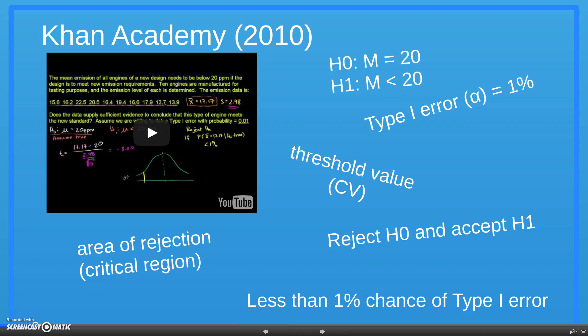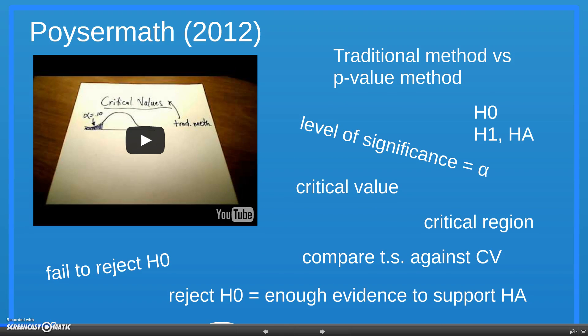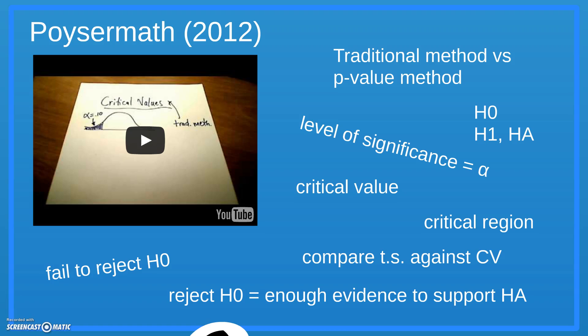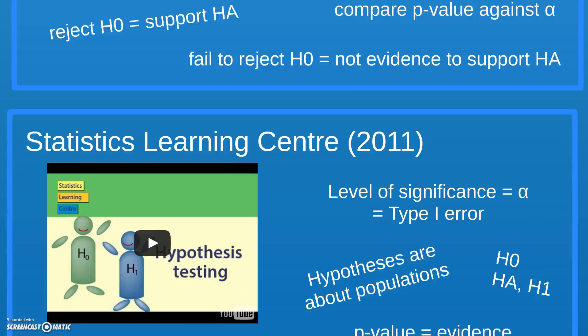You would think that the former video is talking about Fisher's test, while the latter is talking about Neyman-Pearson. The same goes with another popular video by Poisson-Mass. He talks about the traditional methods, which we may assume to be Neyman-Pearson's, and then he talks about the p-value method as an alternative to the traditional methods — but p-value just brings to mind Fisher's methods.